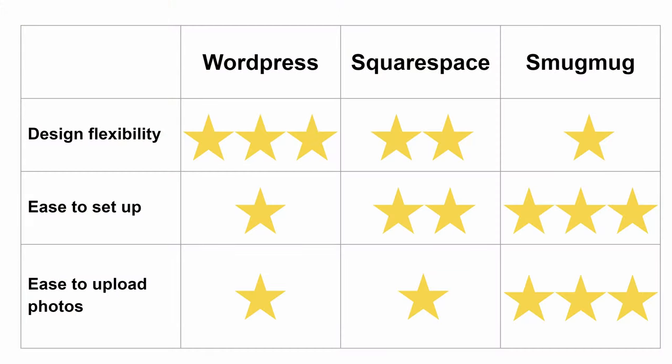Here's my comparison of the three sites for selling photos online, rated one to three stars. WordPress has the most flexibility and templates, Squarespace is second, and SmugMug is third. But more flexibility means more complexity — SmugMug is much easier to set up because the feed and sales are fully integrated. When you upload a photo it's automatically available for sale, something you can't easily do with WordPress or Squarespace.